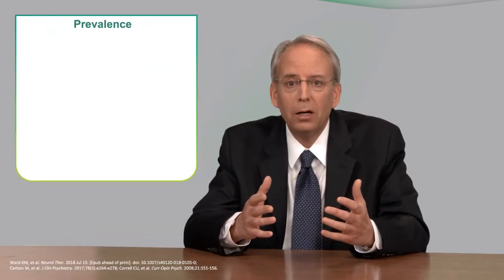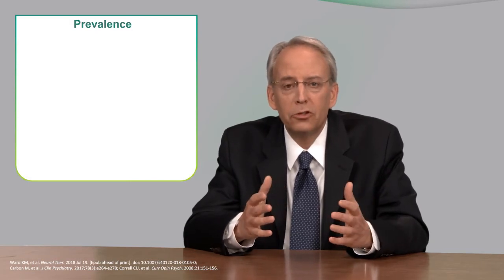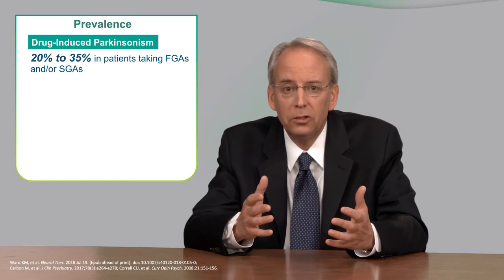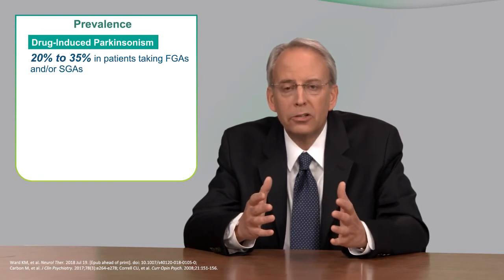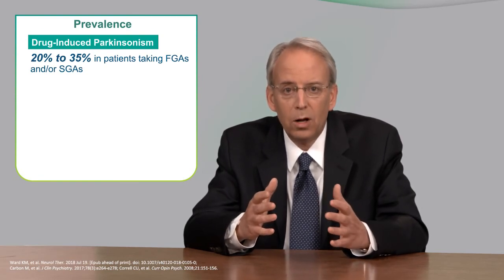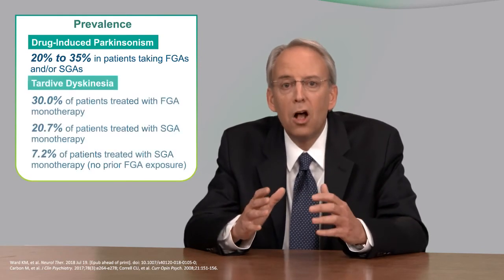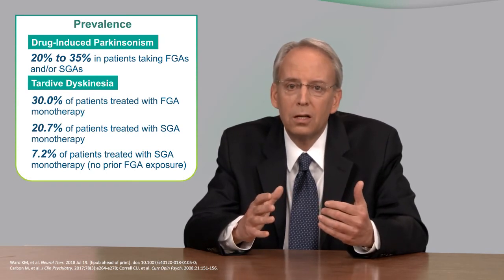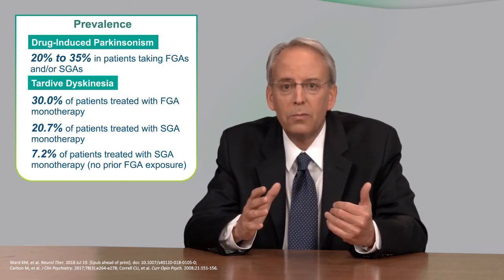Drug-induced Parkinsonism and TD are excellent examples of movement disorders which require very different treatment regimens. It is likely that drug-induced Parkinsonism and TD may be top of mind for psychiatrists these days because 20 to 35 percent of patients taking first and/or second-generation antipsychotics develop their condition. The prevalence of TD with first-generation antipsychotics as a monotherapy is approximately 30 percent, whereas the prevalence of TD with second-generation antipsychotics as a monotherapy is 20.7 percent.